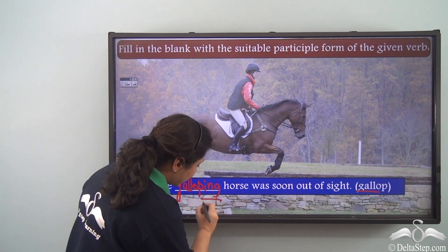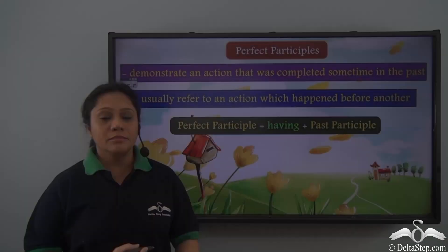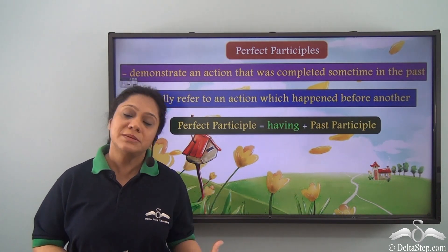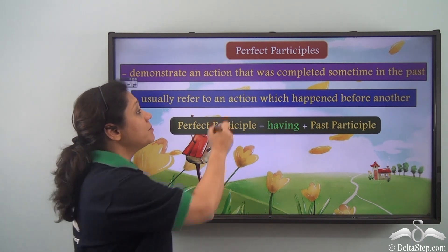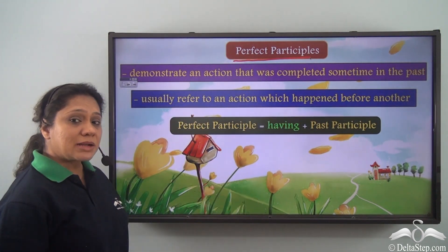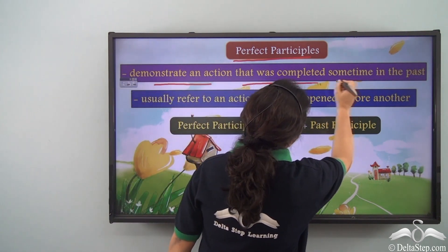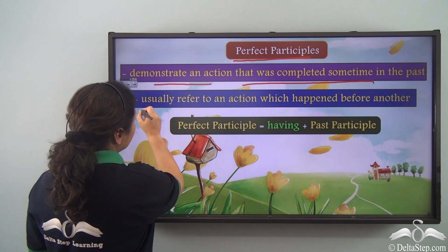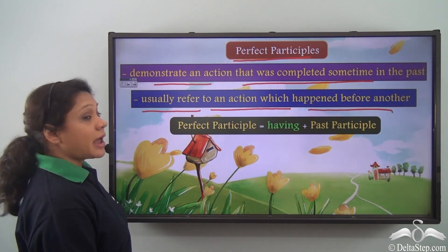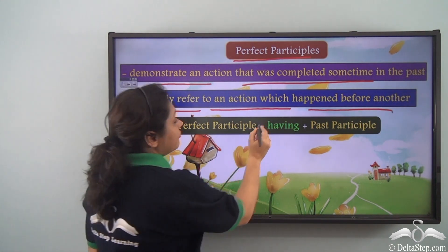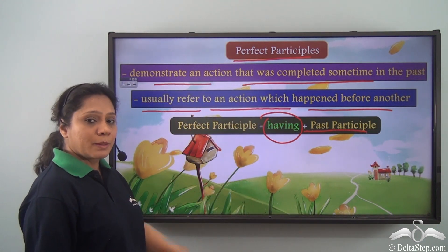We have learnt that apart from the present participle and the past participle, there is another kind of participle known as the perfect participle. Perfect participles demonstrate an action that was completed sometime in the past. They usually refer to an action which happened before another action. We form the perfect participle by adding 'having' to the past participle form of a verb.